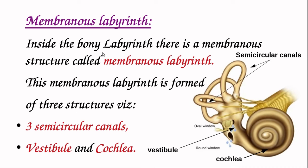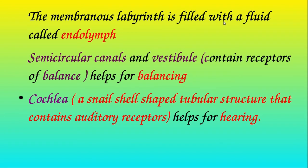The membranous labyrinth is closely enclosed inside the bony labyrinth. The membranous labyrinth is formed of three structures: three semicircular canals (each perpendicular to the other two), a vestibule — a stalk-like portion connecting the semicircular canals with the cochlea — and a snail-shell shaped coiled structure called the cochlea. The membranous labyrinth is filled with a fluid inside called endolymph.